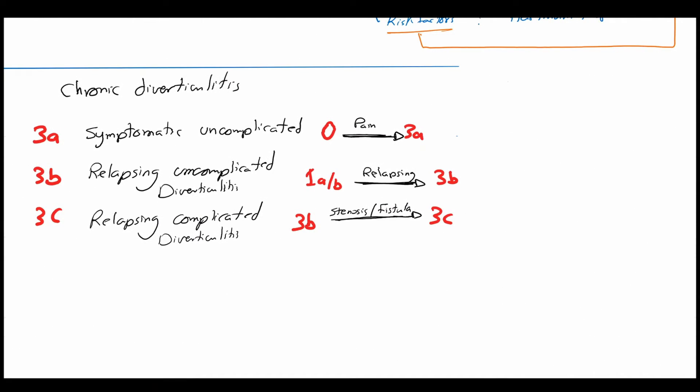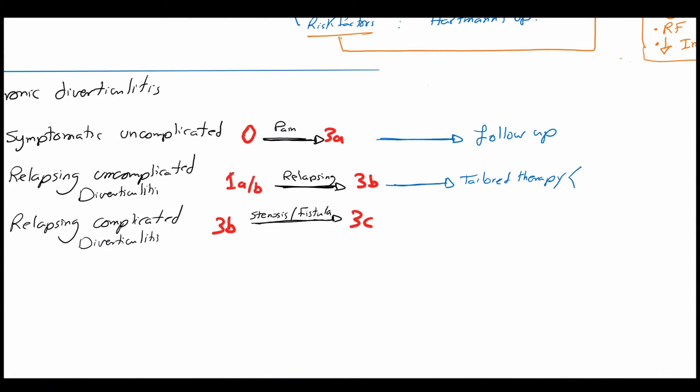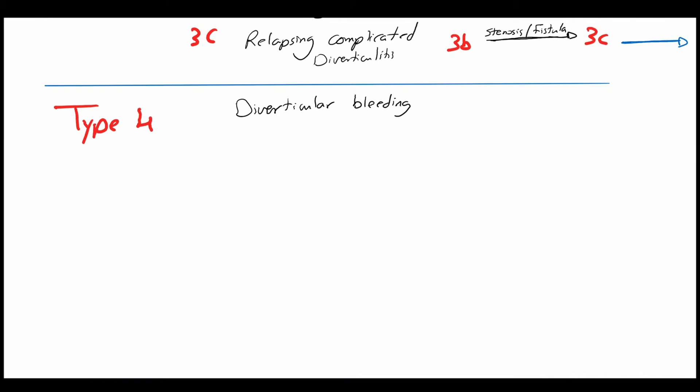Treatment recommendation of symptomatic uncomplicated diverticular disease is follow-up. For relapsing uncomplicated disease, should be tailored therapy. The patient can decide whether to stay with conservative treatment or undergo elective sigmoid resection. In stage 3c, which is complicated diverticulitis, there should be elective surgical treatment.